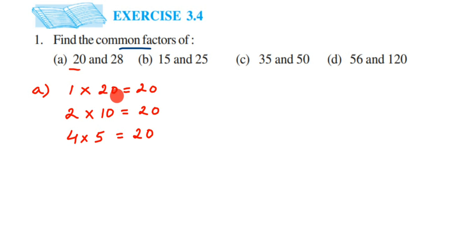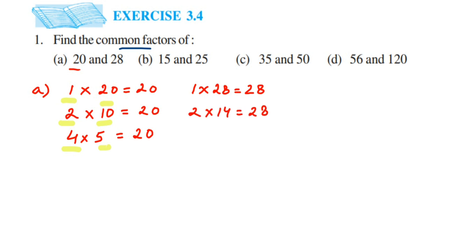The factors of 20 are 1, 2, 4, 5, 10, and 20. Now I'm going to find the factors of 28. So 1 × 28 = 28; it goes in the 2 table: 2 × 14 = 28; it doesn't go in the 3 table; it goes in the 4 table: 4 × 7 = 28. It doesn't go in the 5 or 6 table. It goes in the 7 table, but since we've already written 4 × 7, that's the same as 7 × 4, so we don't write it again. It doesn't go in the 8, 9, or 10 table, so we stop here. Factors of 28: 1, 2, 4, 7, 14, and 28.